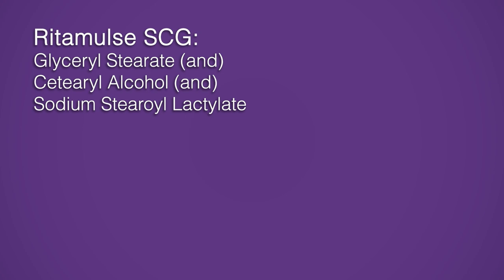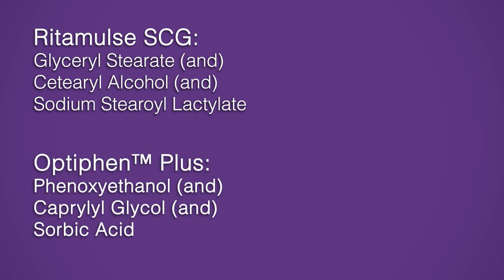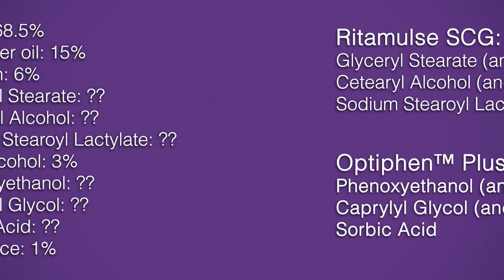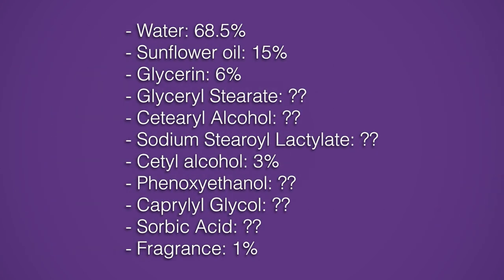The INCI for Redemulce SCG is glyceryl stearate, cetearyl alcohol, and sodium stearoyl lactylate. The INCI for Optifin Plus is phenoxyethanol, caprylyl glycol, and sorbic acid. You might have seen these INCI values included on ingredient lists this way — and while this is better, since all the ingredients in the product are now on the list, this isn't quite correct either. The ingredient label shouldn't have any trade names on it, and it shouldn't have any ANDs either. But you can't just drop the trade name and the ANDs, because now the ingredient list isn't in descending order.